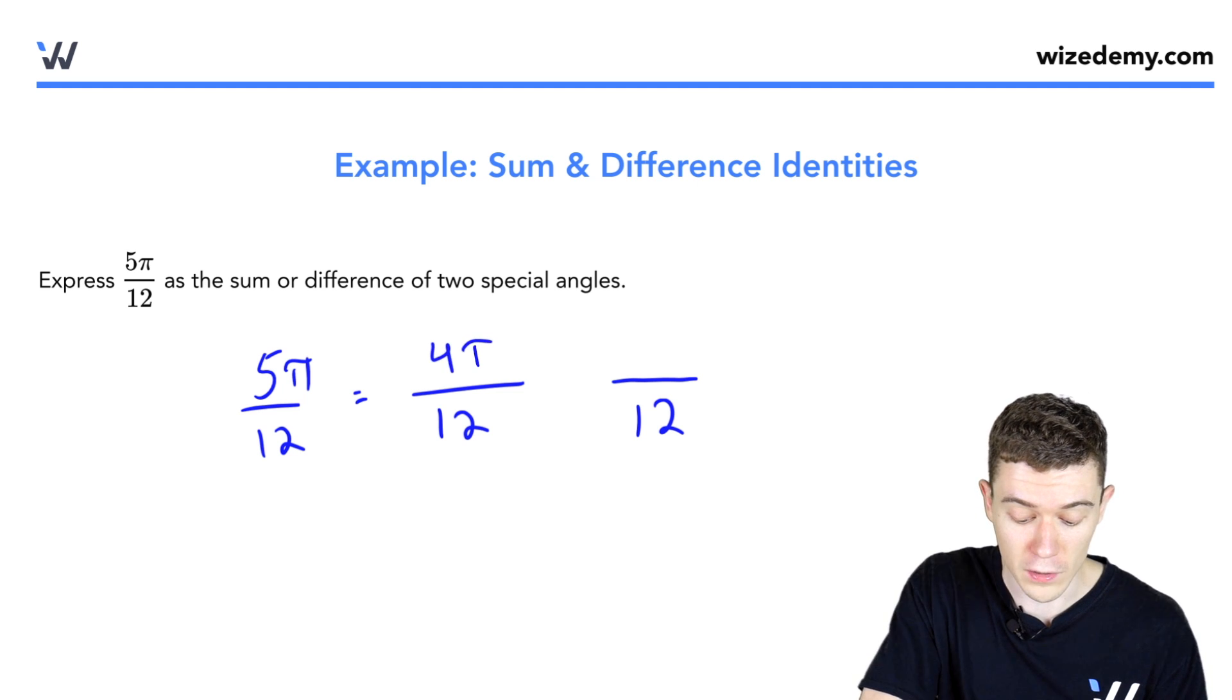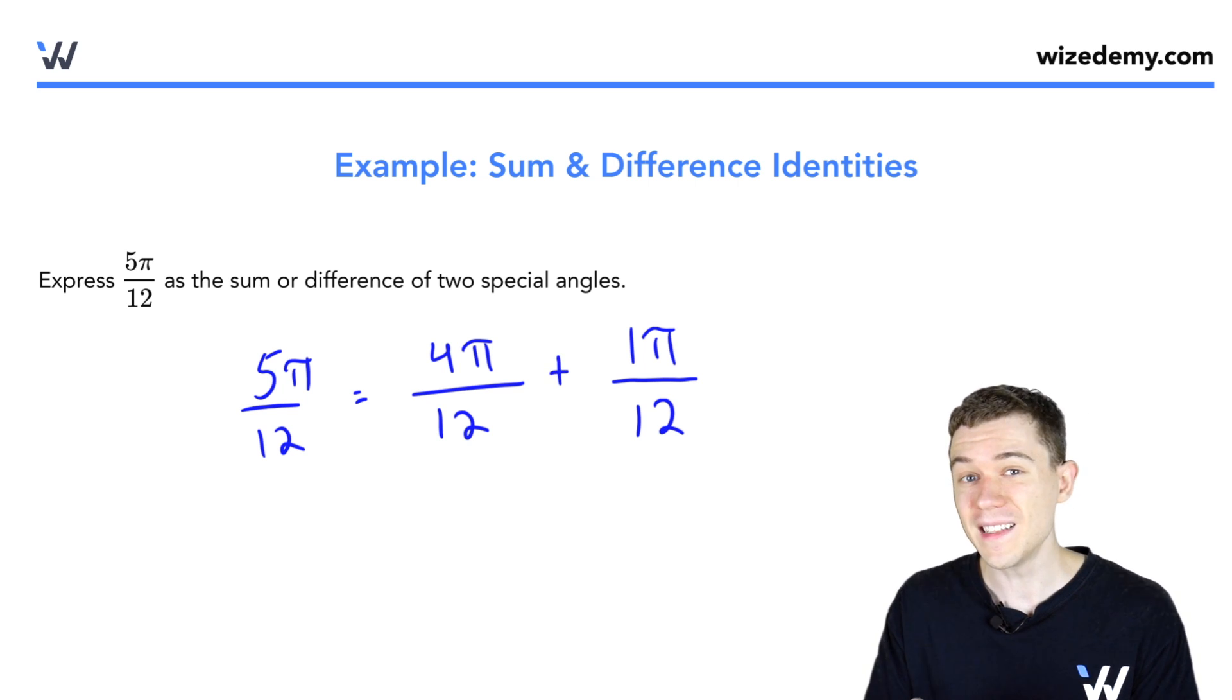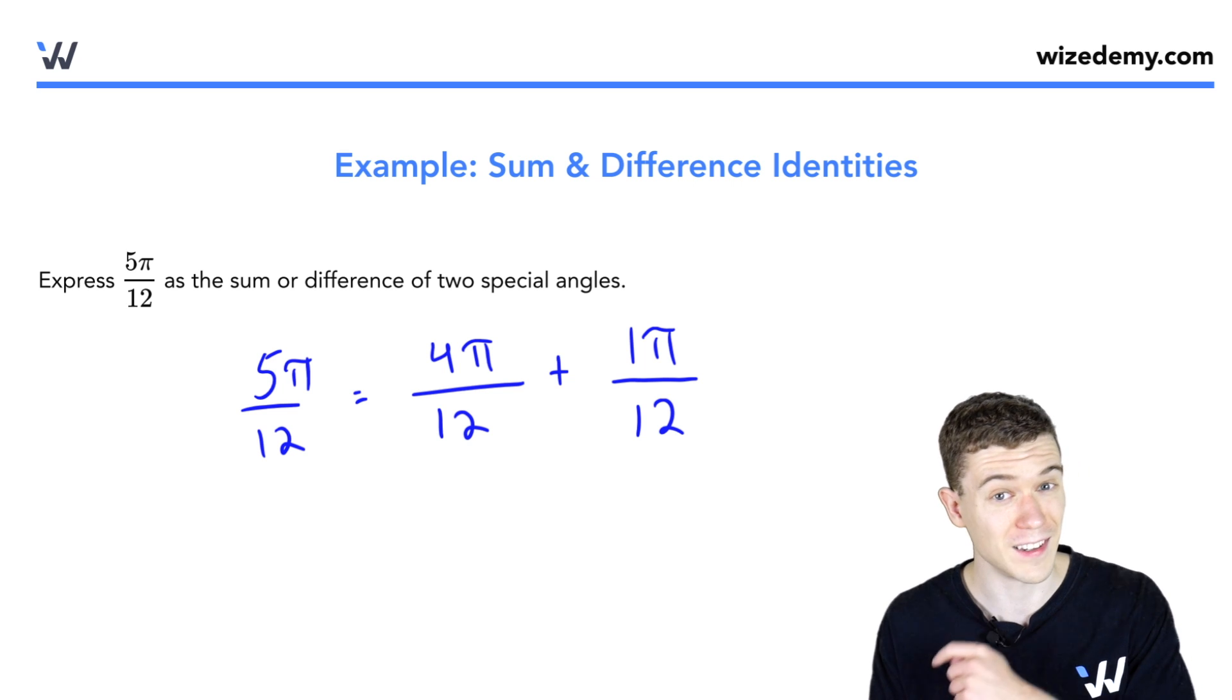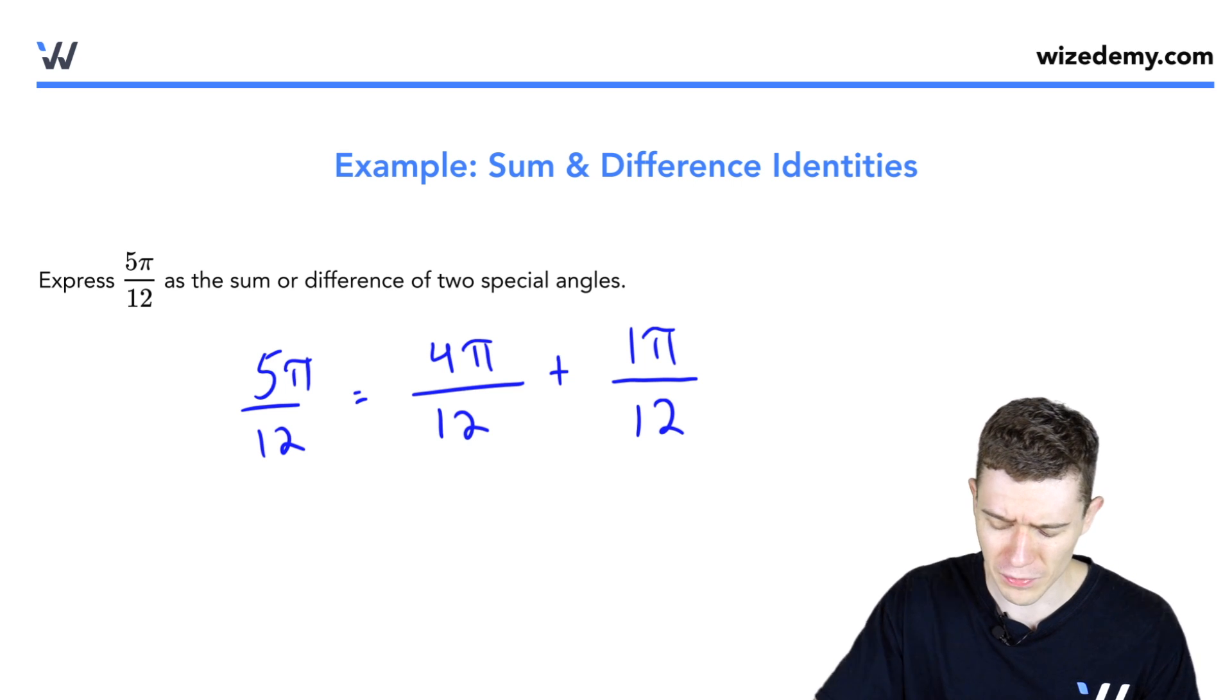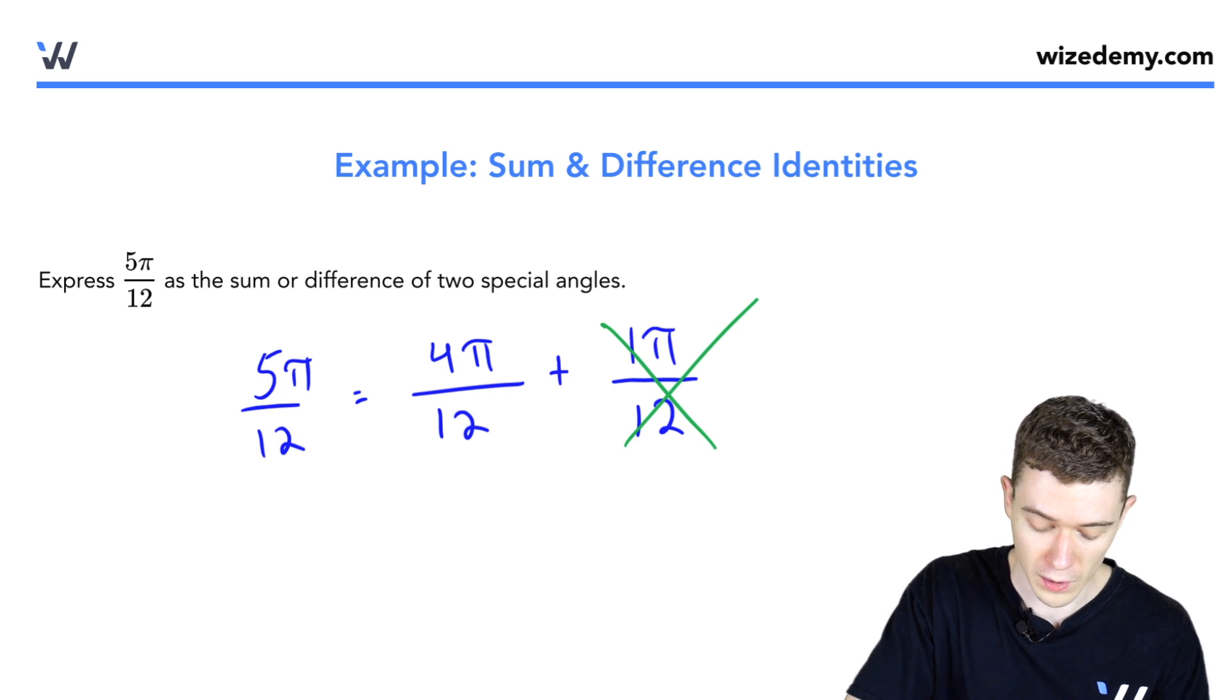We could break it up into 4 plus 1. 4π plus 1π over 12. Hey, that's nice because 4π/12 reduces to π/3. That's on the unit circle. Ah, but 1π/12, that's not on the unit circle. So this splitting up won't work.